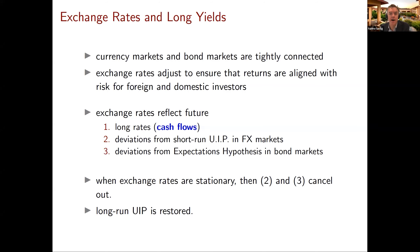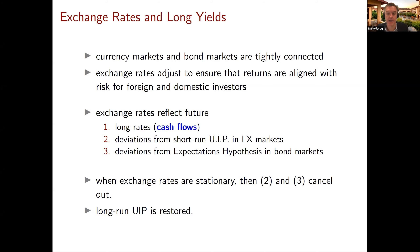The expectations hypothesis says that if investors are risk-neutral in bond markets, then the expected excess return on a bond of any maturity ought to be zero — it's the equivalent of uncovered interest rate parity in currency markets. Based on work with Adrian and Andreas Stathopoulos, and also work by Mike Chernov, Nina Boyarchenko, and Dave Backus: when exchange rates are stationary — when there's no long-run risk and they revert to a mean — then the second and third components always exactly cancel out. What you get is something we'll call long-run uncovered interest rate parity.